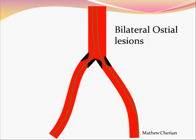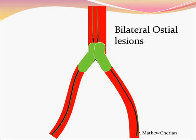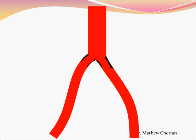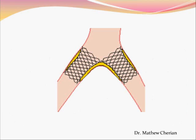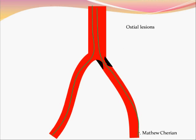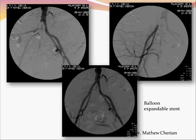For bilateral ostial lesions the technique does not change — two balloons are used, and if results are inadequate, stenting is required. When results are suboptimal, a balloon-expandable stent is the choice for discrete ostial stenosis, placed such that it just protrudes into the aorta. A wire is taken across from both sides, a balloon is taken across, then a balloon-mounted stent is positioned and deployed across the ostium. Here is an example of a focal stenosis of the right common iliac origin treated with a balloon-expandable stent, with excellent results.